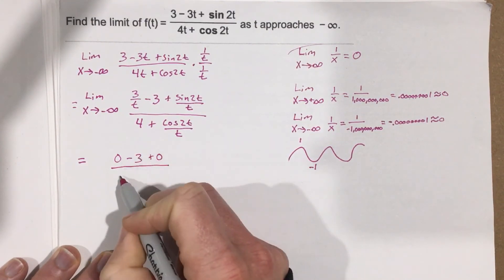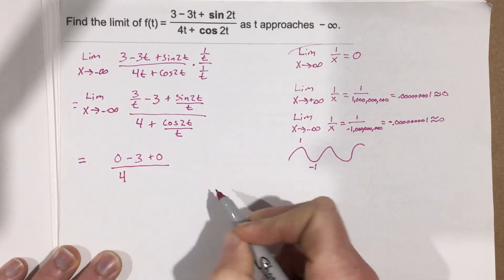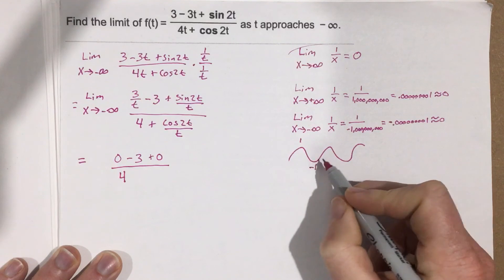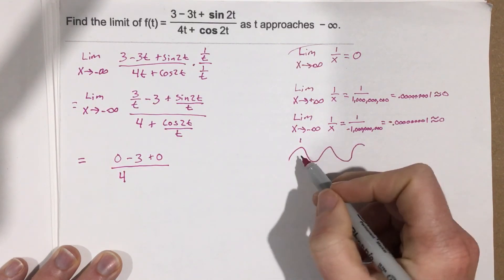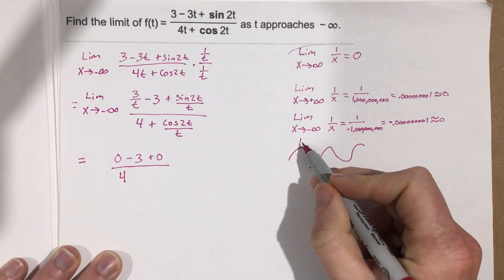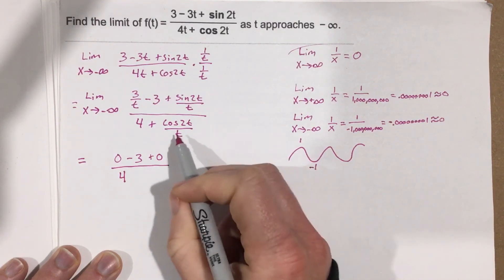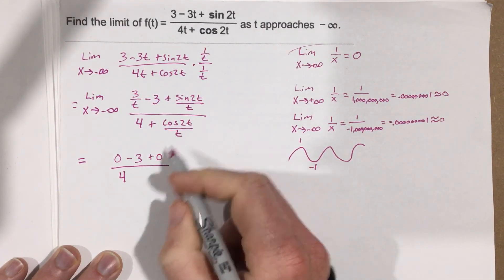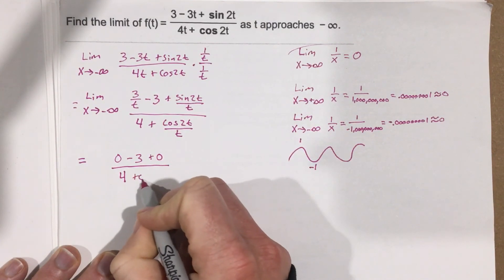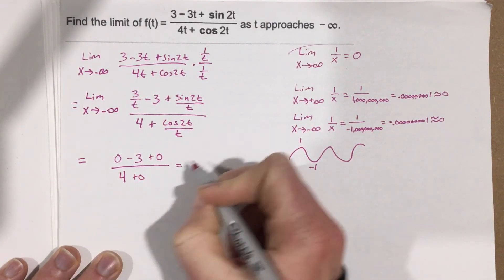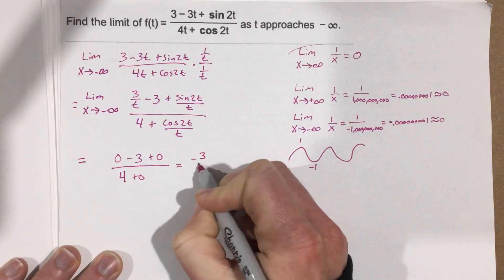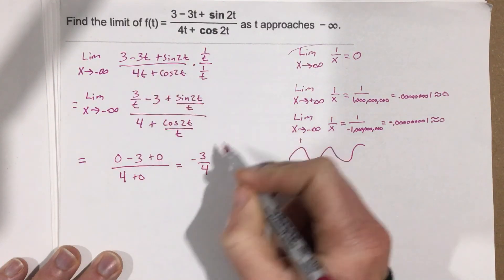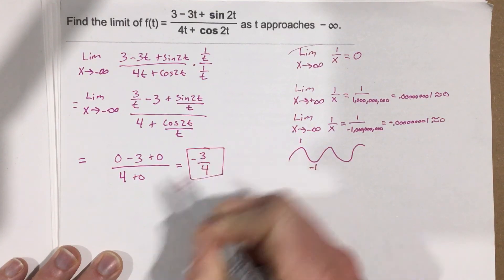On the bottom we have 4, and then plus cosine — cosine does the exact same wave, it's just shifted a little bit, but it's always oscillating between 1 and negative 1, so this is also a small number over a really large number, which leads to 0. So our limit as t approaches negative infinity for this function is negative 3 over 4.